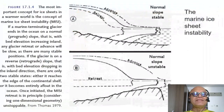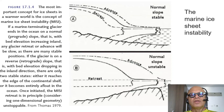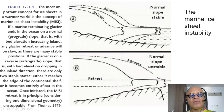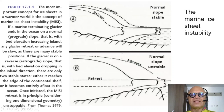I mentioned marine ice sheet instability (MISI) and this is a schematic of the processes. The most important concept is that warming creates marine ice sheet instabilities. If the glacier is terminating in the ocean and has a prograde slope — where the continent is steeper as you go inland — then the glacier tends to be stable. Whereas if it has a retrograde slope, decreasing in height from the waterfront, it becomes unstable.